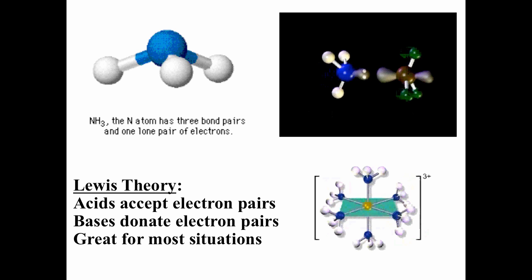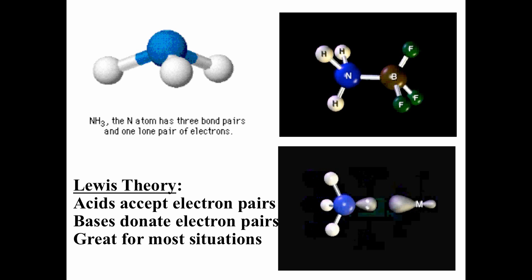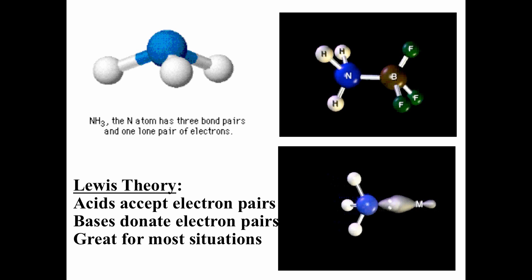For example, ammonia acts as an electron pair donor toward boron trifluoride, a molecule that has a vacant 2p orbital. Another example of Lewis acid-base reactions is the formation of metal complexes — you have a metal ion, typically, and a ligand which donates an electron pair to form that bond. Ammonia also acts as a Lewis base toward metal ions, as in the example of a cobalt(III) hexamine complex, where the ammonia electron pairs are donated into vacant metal orbitals.